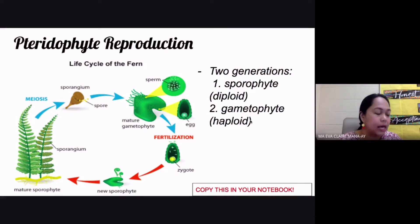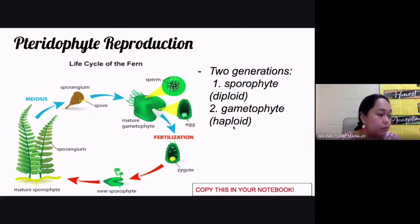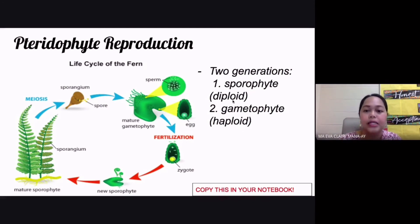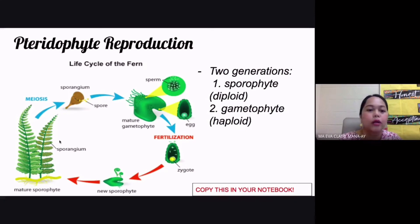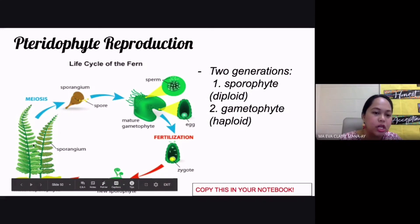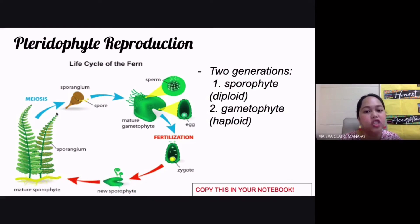Haploid cells are typically found in gametes — sex cells such as sperm and egg cells — which only carry half the genes needed for an organism. Diploid organisms have a complete set of genes. In the alternation of generations in a fern, the first stage is the sporophyte, where the sporangium is diploid — it's the parent organism with a complete gene set — and it produces spores.